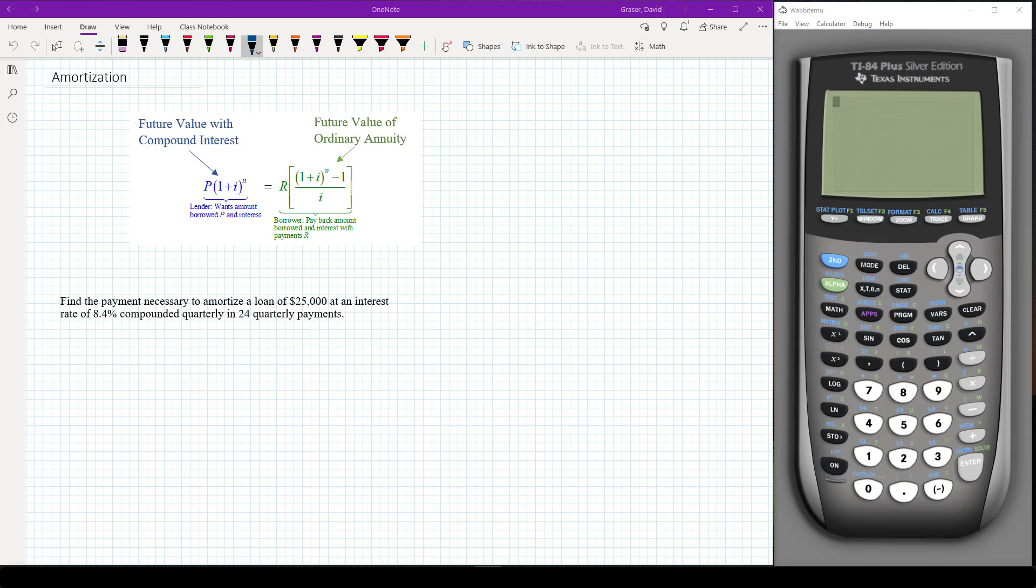So the right hand side is what you would do if you were trying to find the future value with a bunch of payments. What's on the left hand side in blue, this is the future value if you make one lump sum amount you put in the bank or you borrow and then you pay interest on that over time.